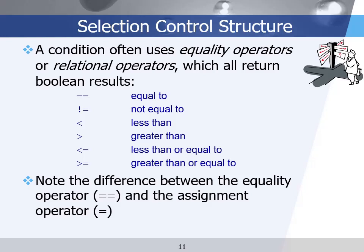The condition expression often uses equality operators or relational operators — for example, equals to (==), not equal to, less than, greater than, etc. The result of all these operators are logical values: true and false. The equality operator (==) is different from the assignment operator (=). The equality operator compares two operands — if they are the same, the result is true; if not, false. The assignment operator changes the left operand's value to the right value.